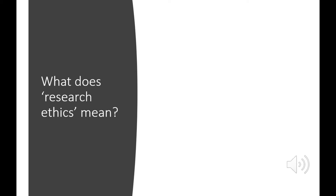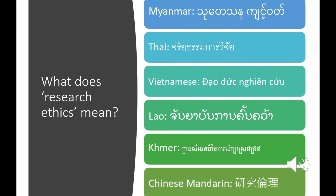Research ethics will also be interpreted depending on language and culture. We'll now listen to the term research ethics translated into six major languages in the Mekong region: Myanmar, Thai, Vietnamese, Lao, Khmer, and Mandarin. That's just the translation of the phrase itself — the interpretation or understanding of what the words mean will be different in different countries and also within countries, depending upon experiences and understanding of both ethics more broadly and also research.